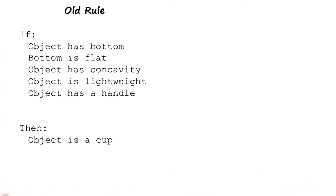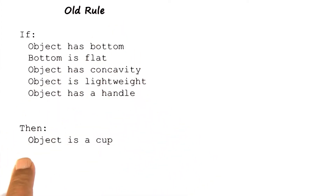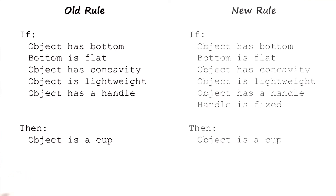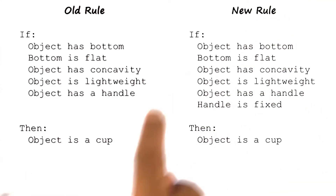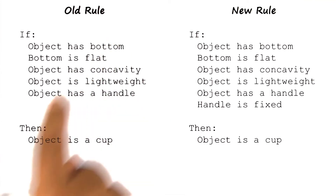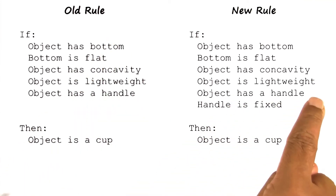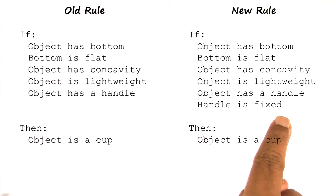Let us look at the result of the kind of learning technique we are discussing here. Here might be the old concept of a cup. In this particular case, this concept definition has been put in the form of a production rule. Here is the new concept definition for a cup. This is almost identical to the previous definition, except that now the object not only has a handle, but also the handle is fixed.